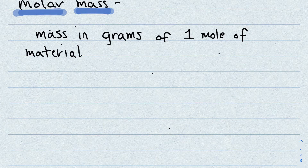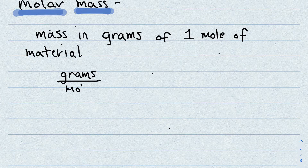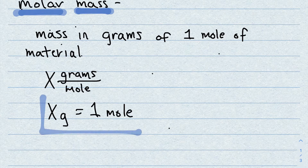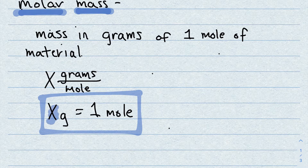The molar mass is measured in grams per mole. You can rewrite this as: x grams per mole, or x grams is equal to one mole. This gives us a nice conversion factor, just like the conversion factors you've already learned — for example, 6×10²³ is equal to one mole. Now we have the molar mass. But how do we figure out what x is? We use the periodic table.